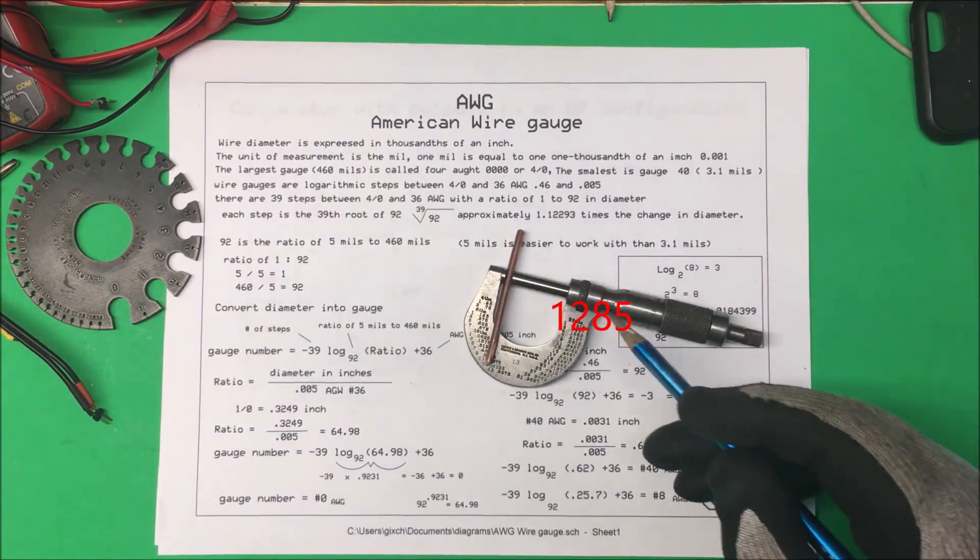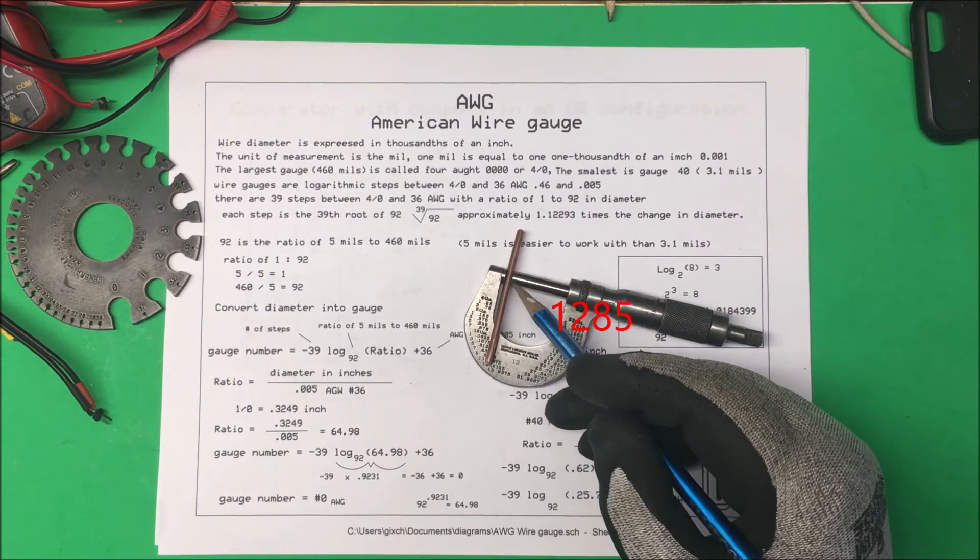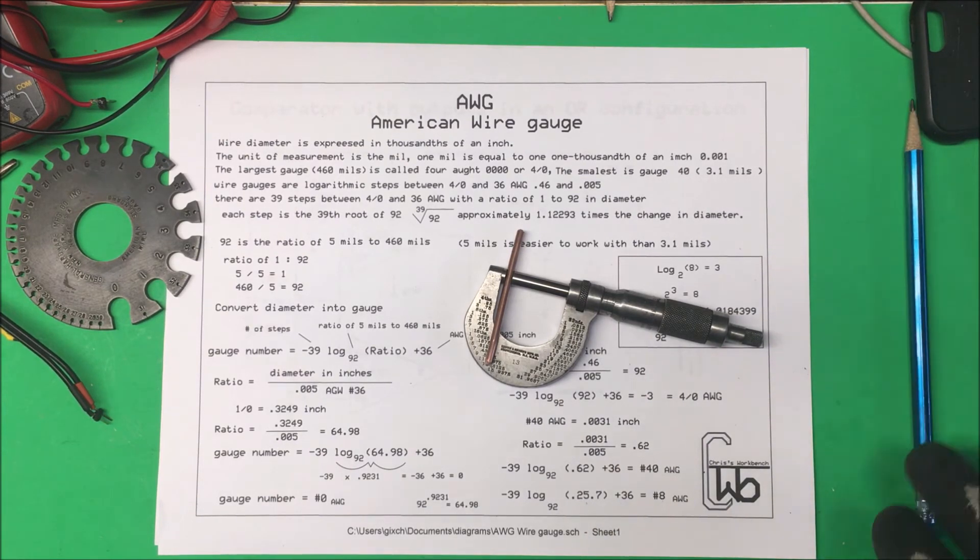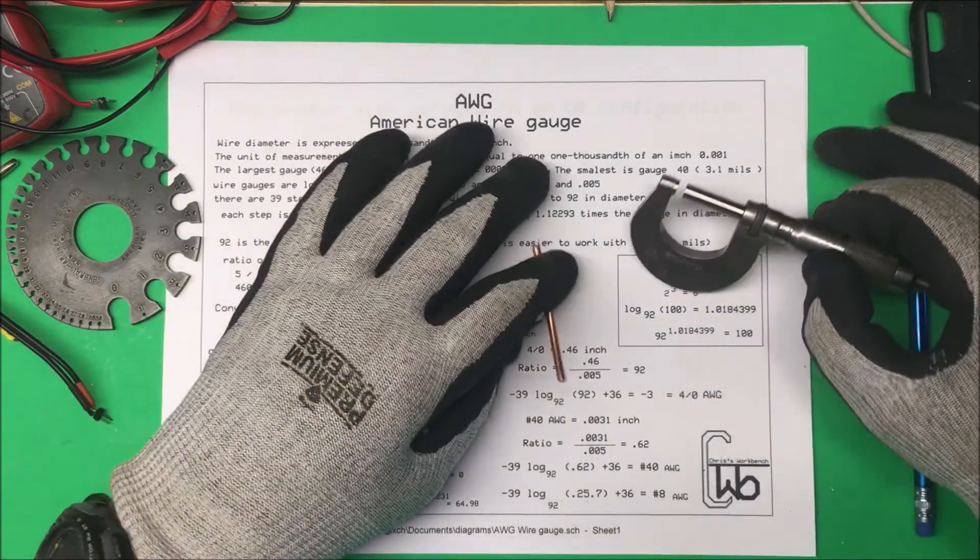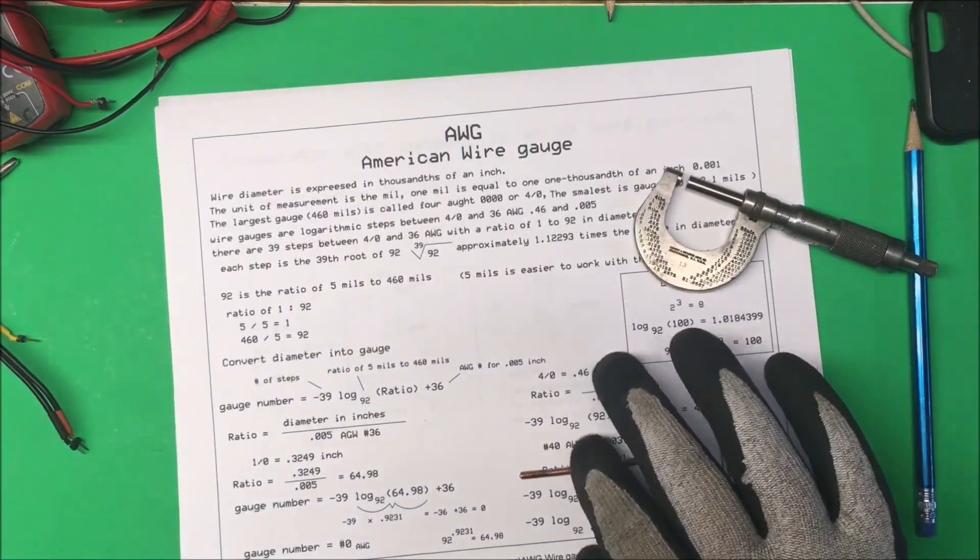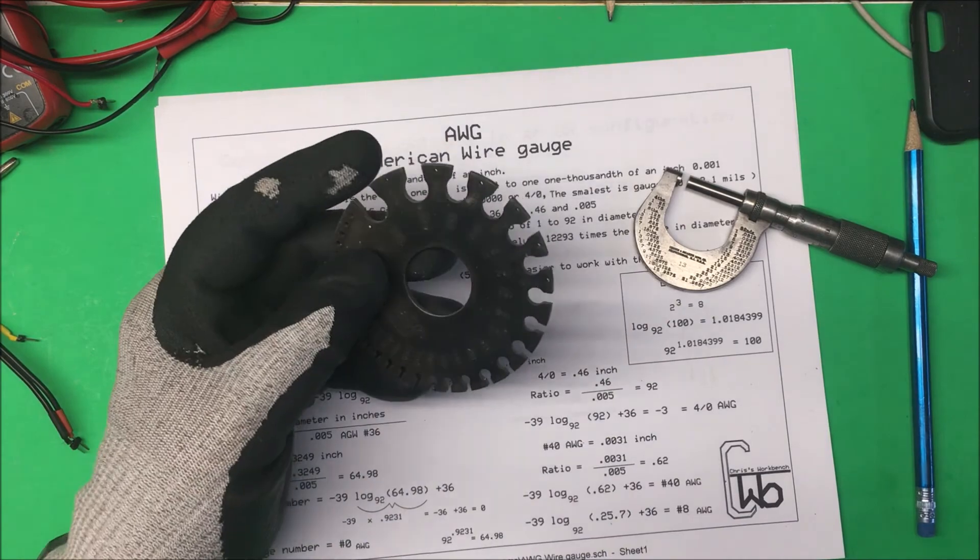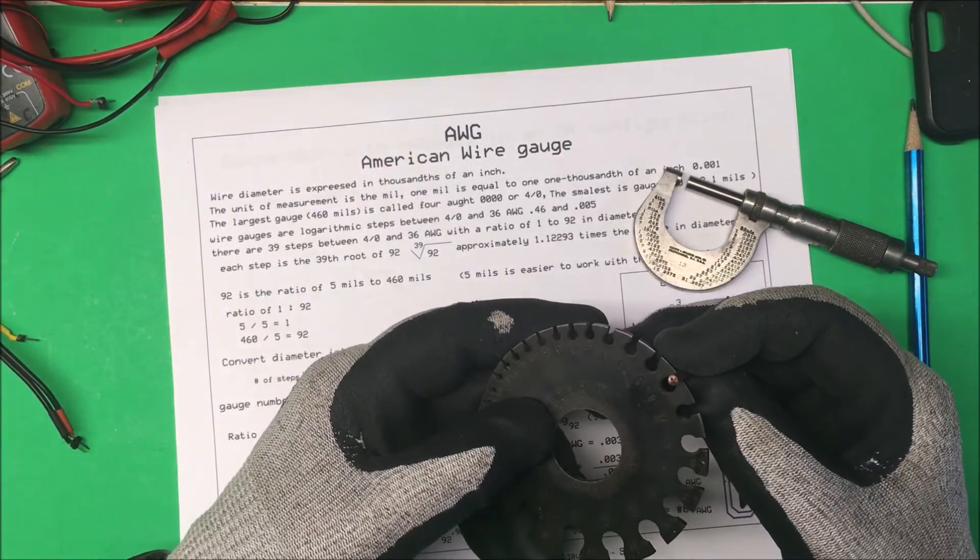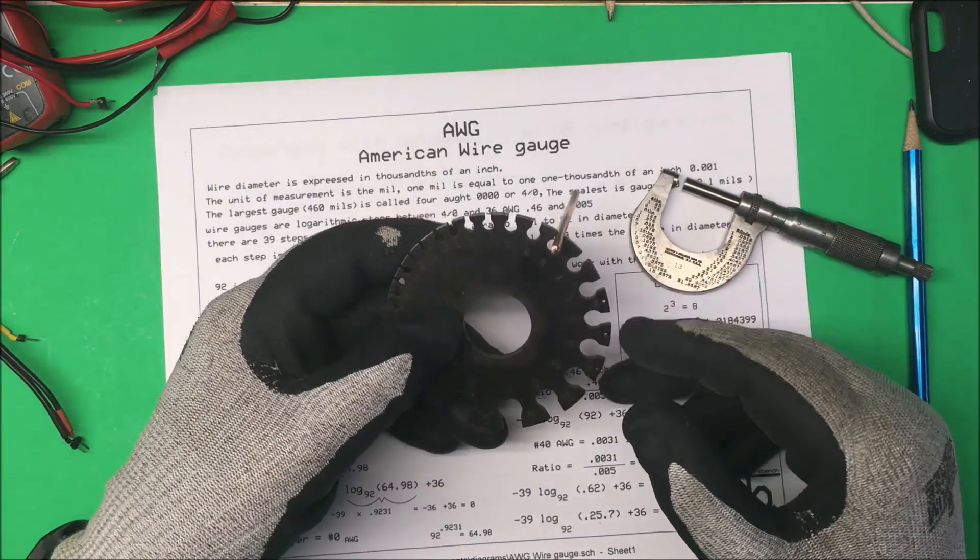If we take that diameter and divide it all out and put it into the formula it comes out to eight AGW so this is number eight wire. Of course we can test it on this unit here a lot easier, it just gives it right to you and eight should be there, yep that's eight right there.